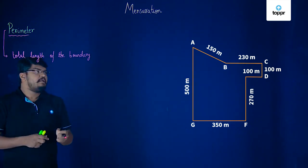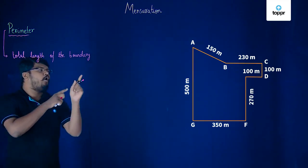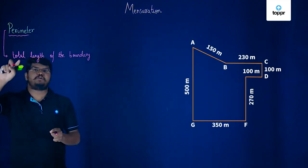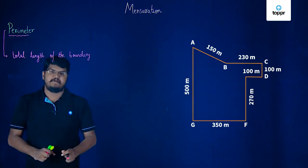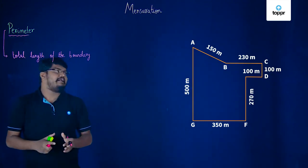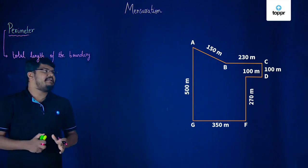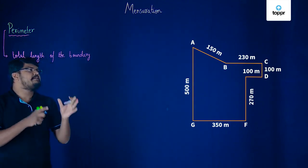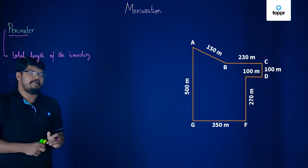And if I now add all the lengths then it will become the total length of the boundary of the closed figure and so I could understand that by perimeter, she mean the sum of all these sides of the given diagram, given figure.